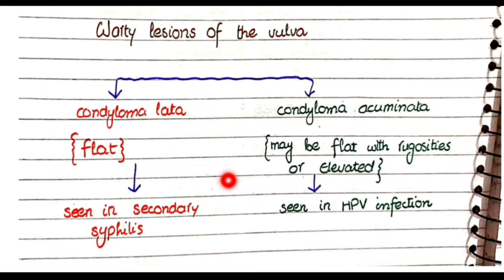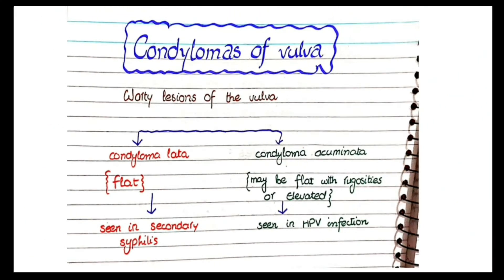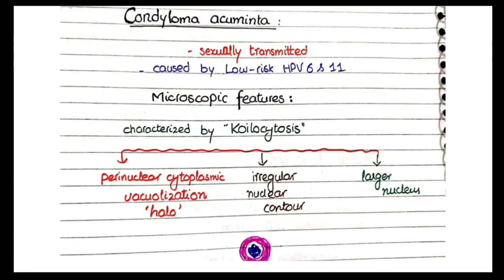Remember this important difference: condyloma lata are always flat, while condyloma acuminata may have rugosities or may be elevated. As compared to condyloma lata, which is seen in secondary syphilis, condyloma acuminata is seen in human papilloma virus infection. Remember this — it is important from an MCQ point of view. We will now discuss condyloma acuminata in detail.